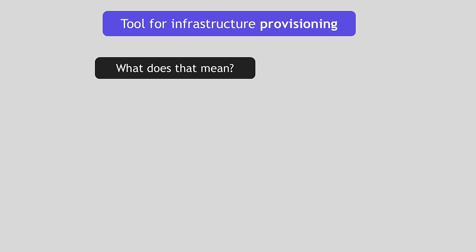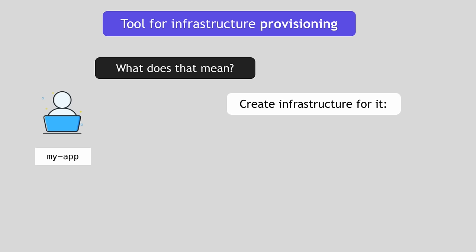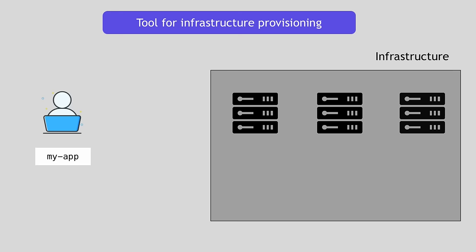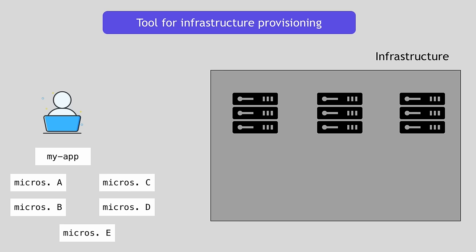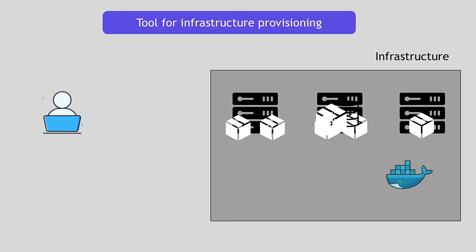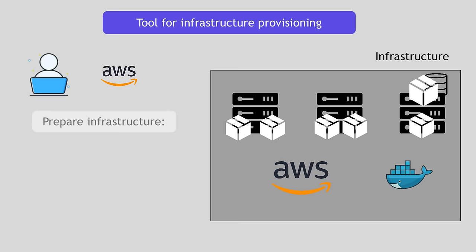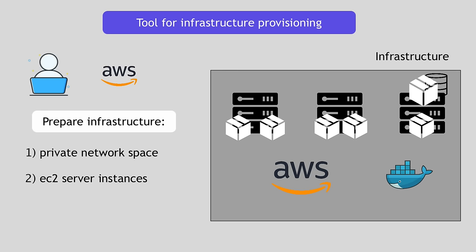Let's say you just started a project where you create some application and you want to set up an infrastructure from scratch. Let's say you want to spin up several servers where you will deploy five microservice applications as Docker containers, and also deploy a database container. You decide to use the AWS platform. So first you go to AWS and prepare the setup: create your private network space, create EC2 server instances, install Docker on each one, set up security like firewalls, set up networking, etc.